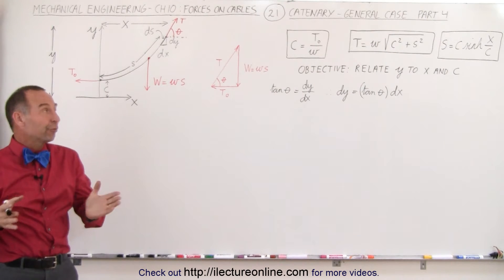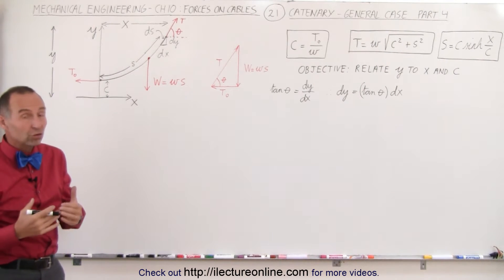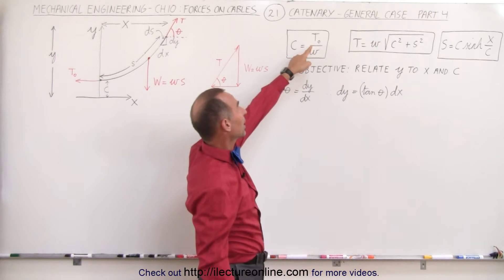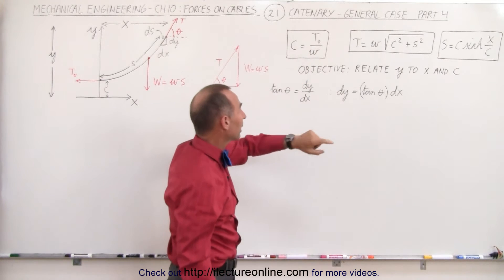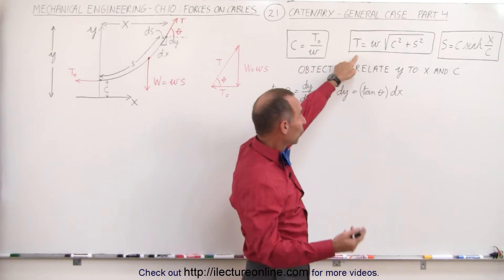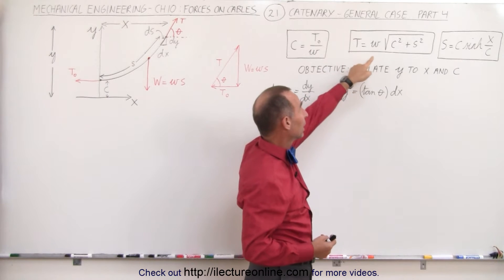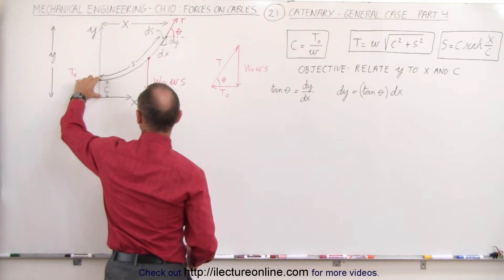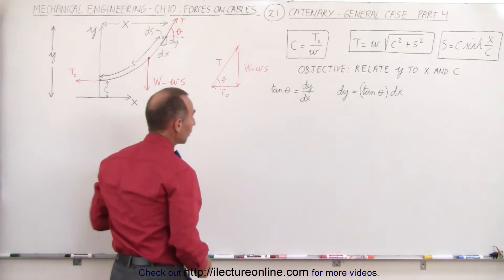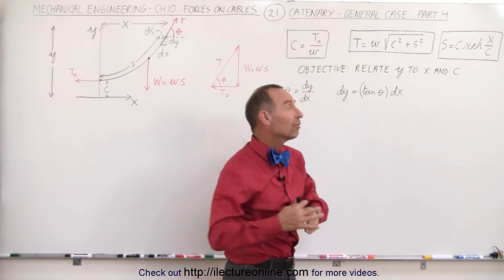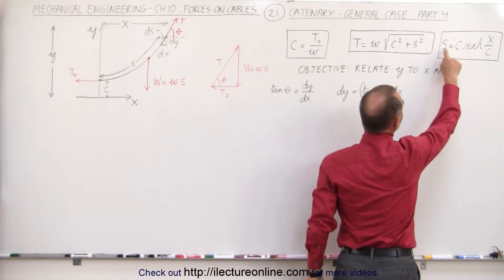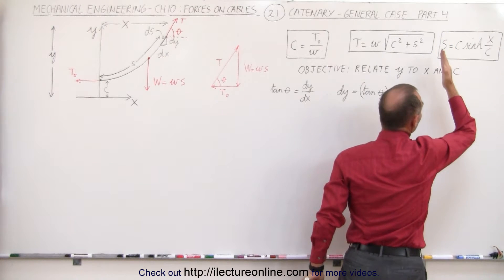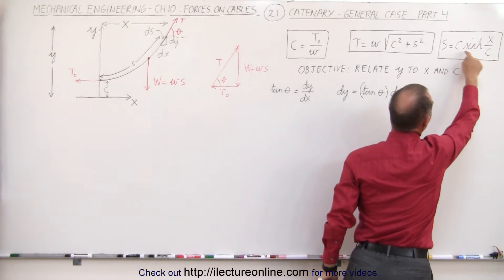Welcome to Electronline. So far, we have some major equations we need to solve the catenary. We have the relationship between C, the tension at the bottom of the cable, and the weight per unit length. We have an equation for the tension at the attach point or any point along the cable in terms of the length of the cable and the constant C. Remember that constant C is the distance from the origin to the lowest point on the cable. On the previous video, we found an expression that relates the length of the cable to the horizontal distance from the lowest point of the cable to the attached point, and the constant C.